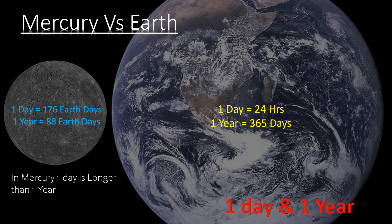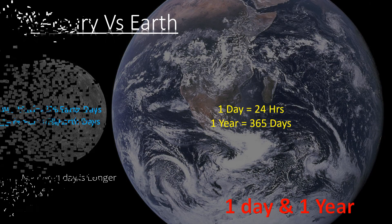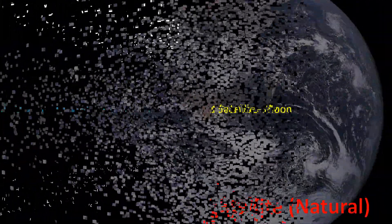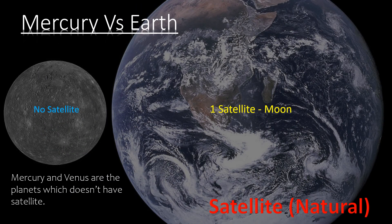On Mercury, one day is longer than one year. One day on Mercury is 176 Earth days, while one year is 88 Earth days. On Earth, one day is just 24 hours and one year is 365 days. Mercury and Venus are the planets which don't have a satellite, but we have the Moon as our natural one.